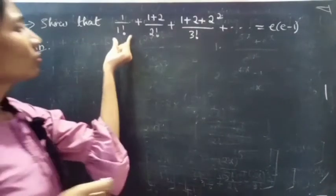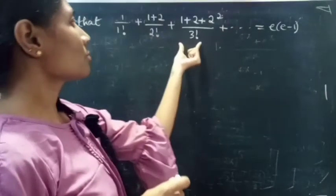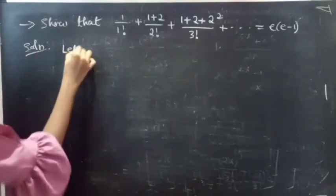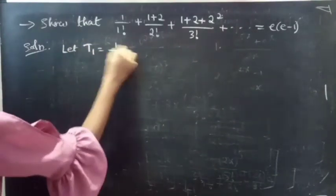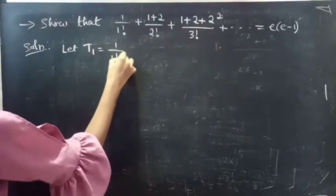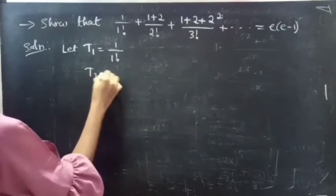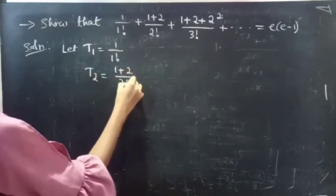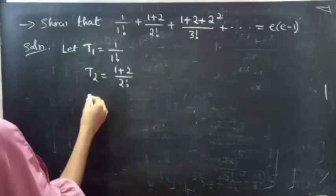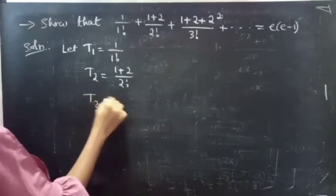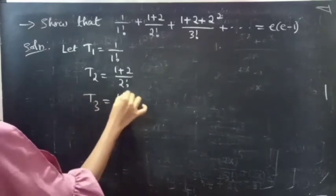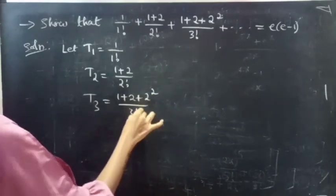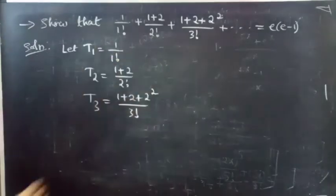We are given 3 terms. Let t1 equals to 1 by 1 factorial, t2 equals to 1 plus 2 by 2 factorial, and t3 equals to 1 plus 2 plus 2 squared by 3 factorial.